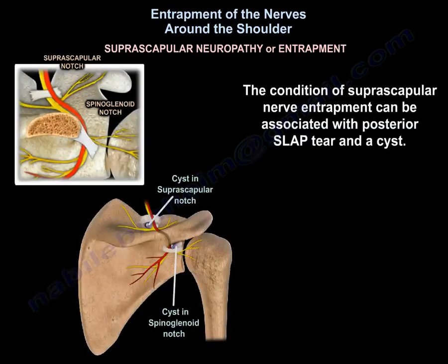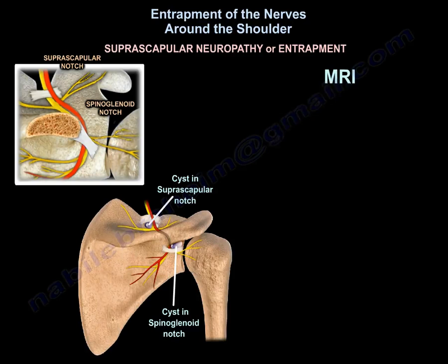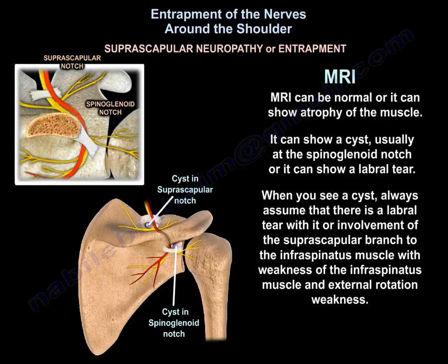Suprascapular nerve entrapment can be associated with a posterior SLAP tear and a cyst. On MRI, findings may be normal, show atrophy of the muscle, show a cyst usually at the spinoglenoid notch, or show a labral tear. When you see a cyst, always assume there is a labral tear associated with it, along with involvement of the suprascapular branch to the infraspinatus muscle causing external rotation weakness.